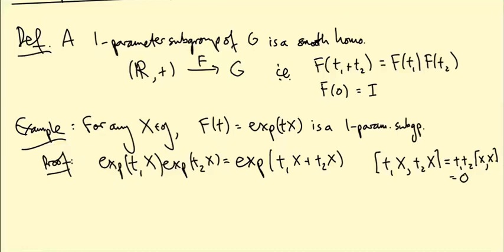So there's no correction terms in the Baker-Campbell-Hausdorff formula, and this is exp((T1 + T2)X), and this is exactly saying that F(T1 + T2) equals F(T1) times F(T2). Moreover, exp(0 times X) equals exp(0), that's the identity matrix.